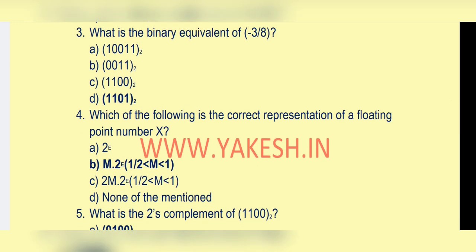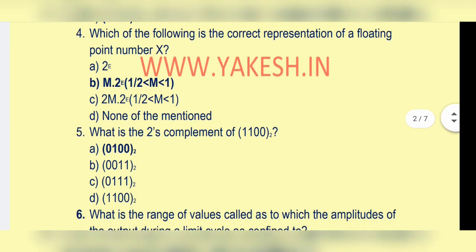Next question: what is the binary equivalent of minus 3 by 8? Option d: 1101 base 2 is the correct answer. Which of the following is the correct representation of a floating point number x?